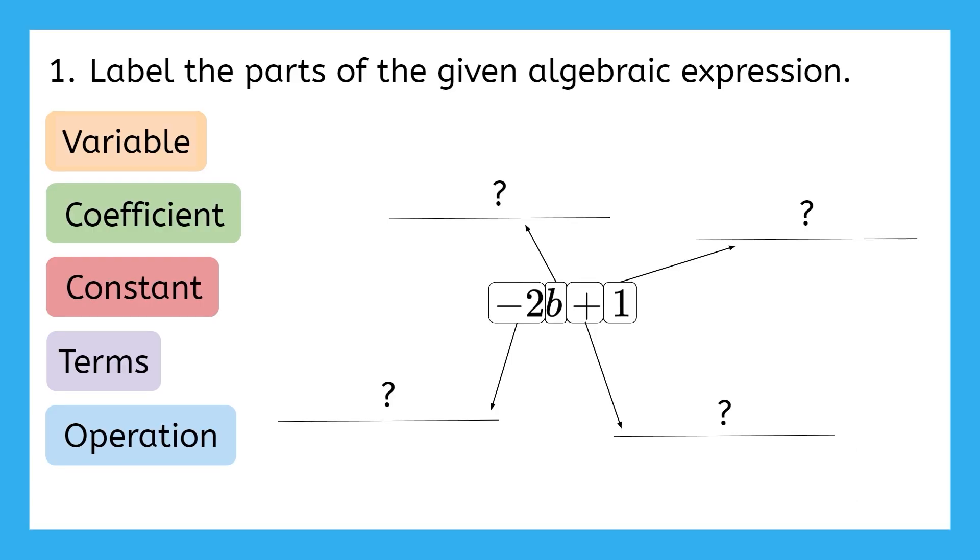Okay, let's see how you did, starting with the variable. Do we have any variables in this algebraic expression? We sure do! We have the variable b. Now, let's take a look over here at this negative 2. It's a number that is being multiplied by a variable, showing us how many b's we have. What word describes the number in front of a variable? That's right, coefficient. Negative 2 is the coefficient of b.